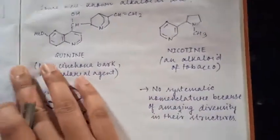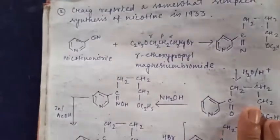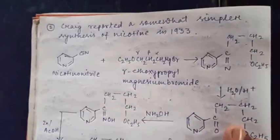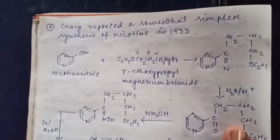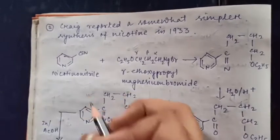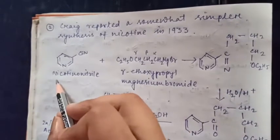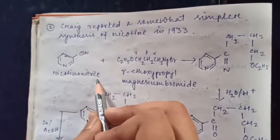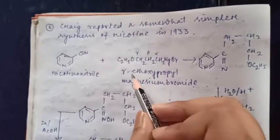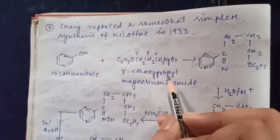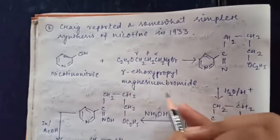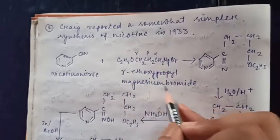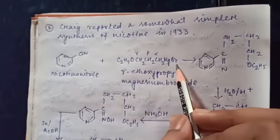Now let's discuss the second synthesis. It is simpler than the first one. It was reported by Craig in 1933. In this case, nicotinonitrile is treated with gamma-ethoxypropyl magnesium bromide, which is an organometallic Grignard reagent.